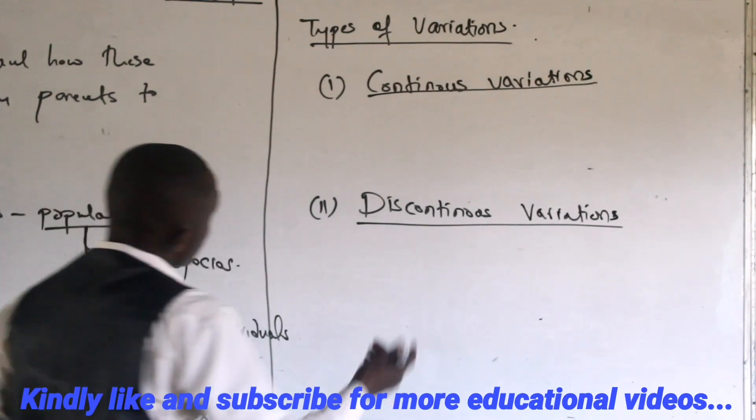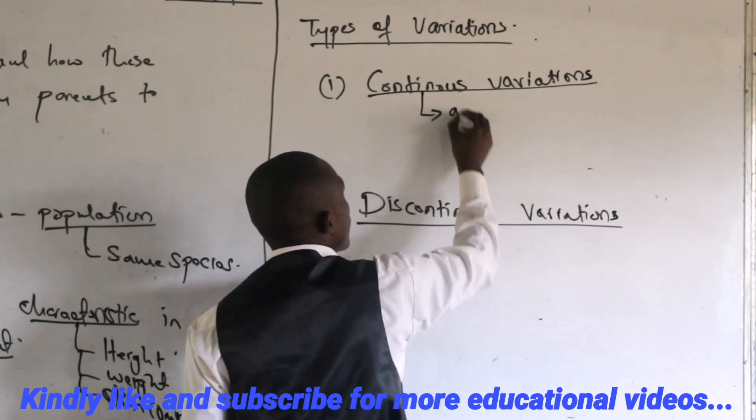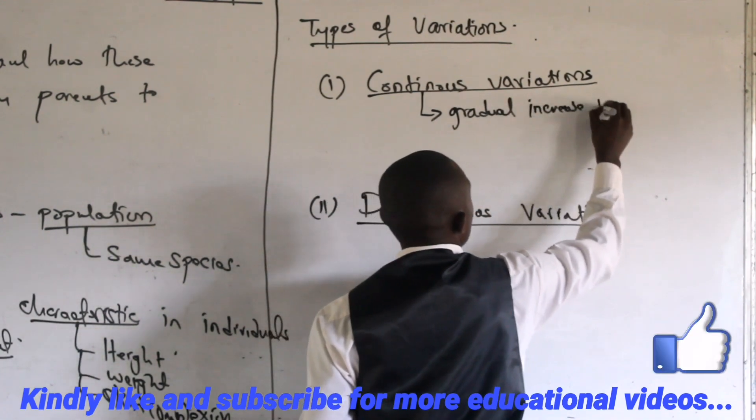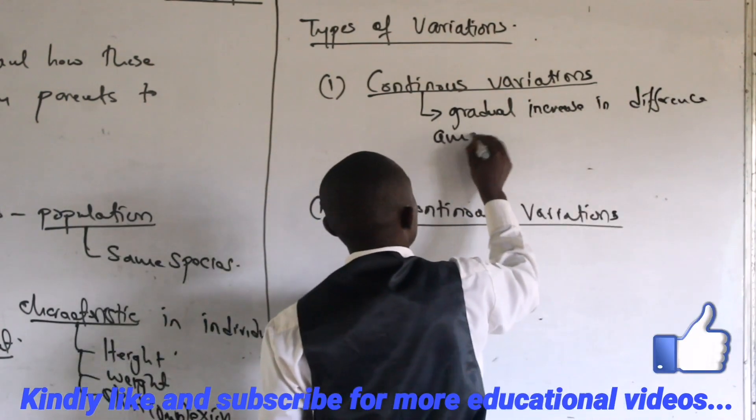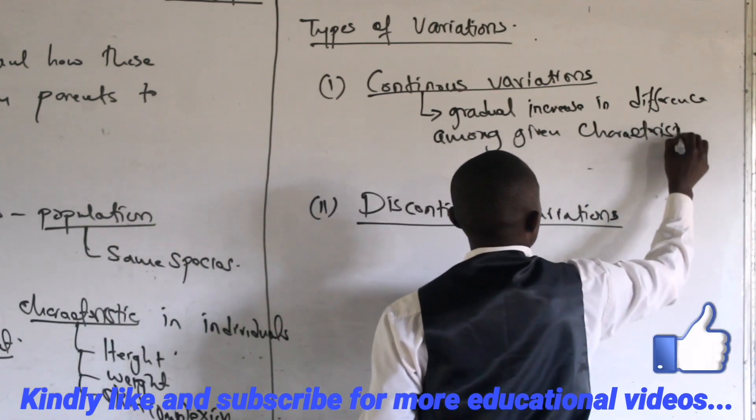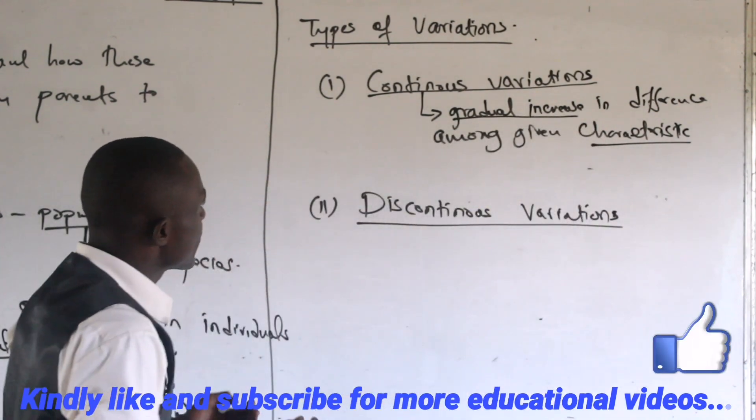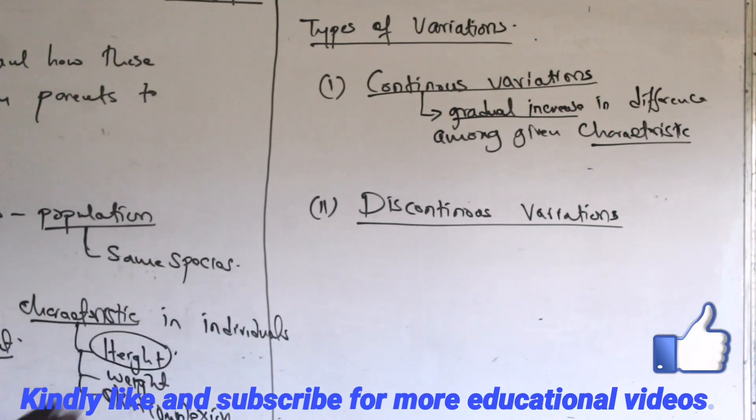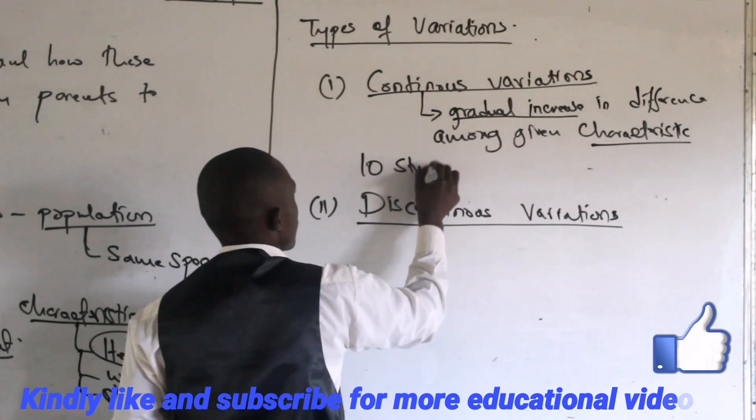Continuous variation simply refers to a gradual increase in differences among given characteristics. For example, I'll pick this characteristic of height. Let's say we decide to measure the height of 10 students in a school.